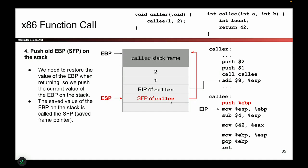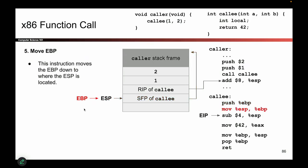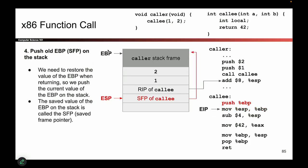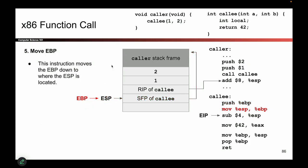Now that EBP has its old value saved, I'm safe to take EBP and change it so it no longer points up at the caller frame. The second prologue instruction rewrites EBP so it now points down to wherever ESP is. So they both now hold the same address — they are pointing at the same place. In summary: I took EBP, saved its old value on the stack so I don't forget it, then changed EBP to point further down. I'm in the process of creating a brand new stack frame.